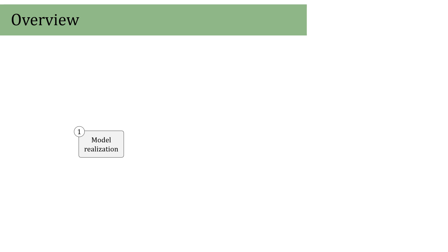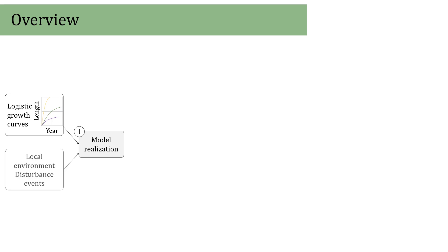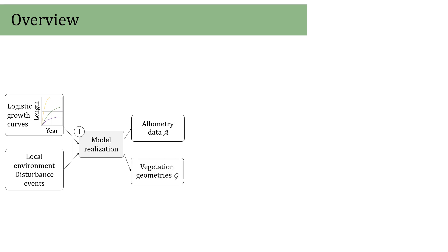Our model uses a three-step process. First, we perform several growth and decay simulations on each species in our scene using null logistic growth curves and controlling for variation by adding a range of different environments and disturbance events. This provides not only the geometry but also information on species allometries.